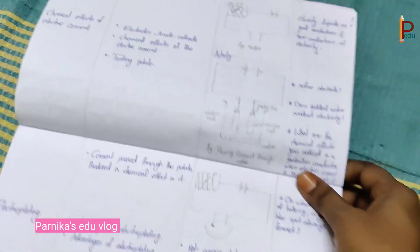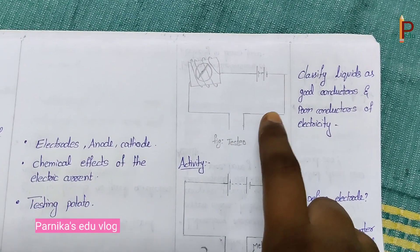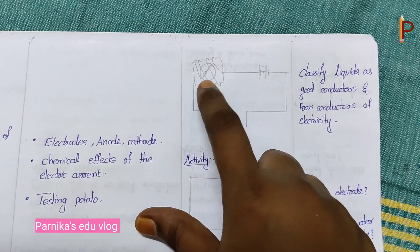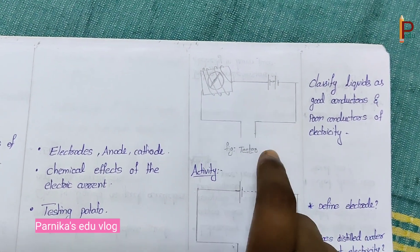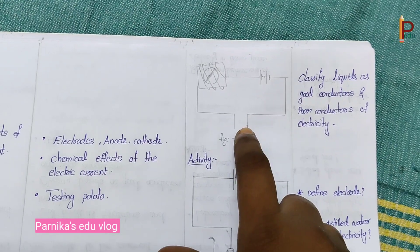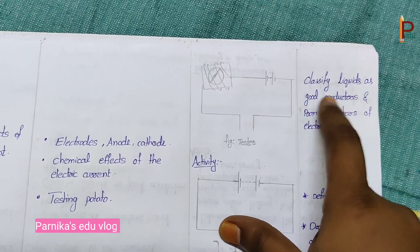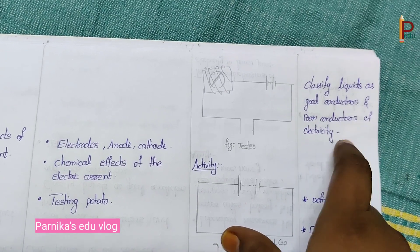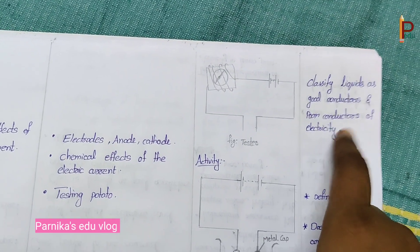Next, this is another activity — it is a tester to classify liquids as good conductors and poor conductors of electricity. It requires a compass needle and one battery. In the evaluation column, we have to ask a question related to this particular topic.